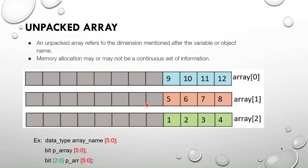If you see the syntax, it is similar to packed — but the array dimension is declared after the variable name. For example, `bit p_array [5:0]` — the dimension `[5:0]` comes after the array name. In this first statement, array size is 6 but each element is 1 bit (scalar). In the second statement, `bit [2:0] p_array [5:0]` — the array size is 6 but each index holds 3-bit data.